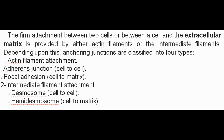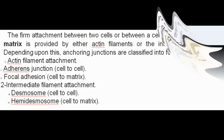Depending upon this, anchoring junctions are classified into four types: actin filament attachment — adherence junction (cell-to-cell) and focal adhesion (cell-to-matrix); intermediate filament attachment — desmosome (cell-to-cell) and hemidesmosome (cell-to-matrix).